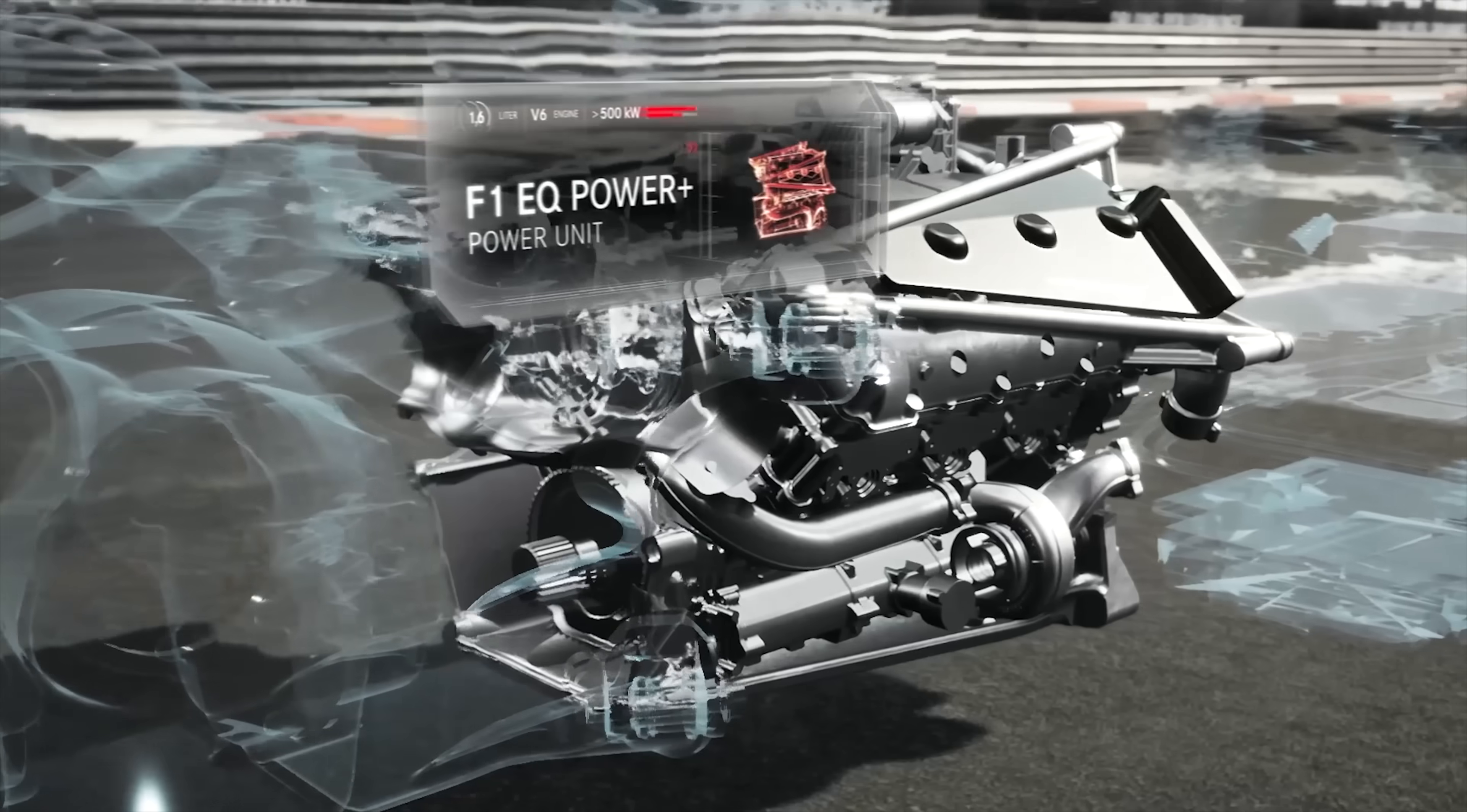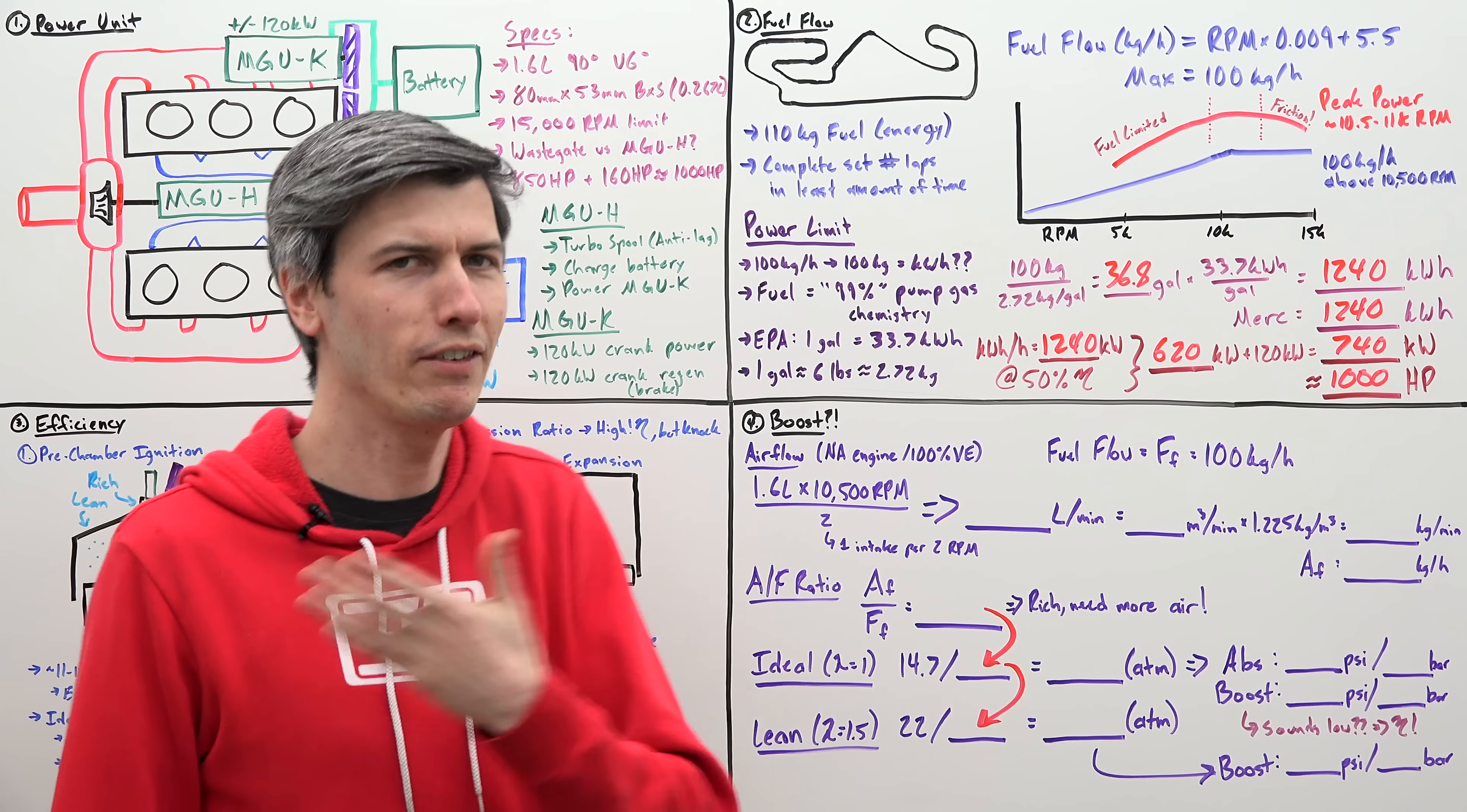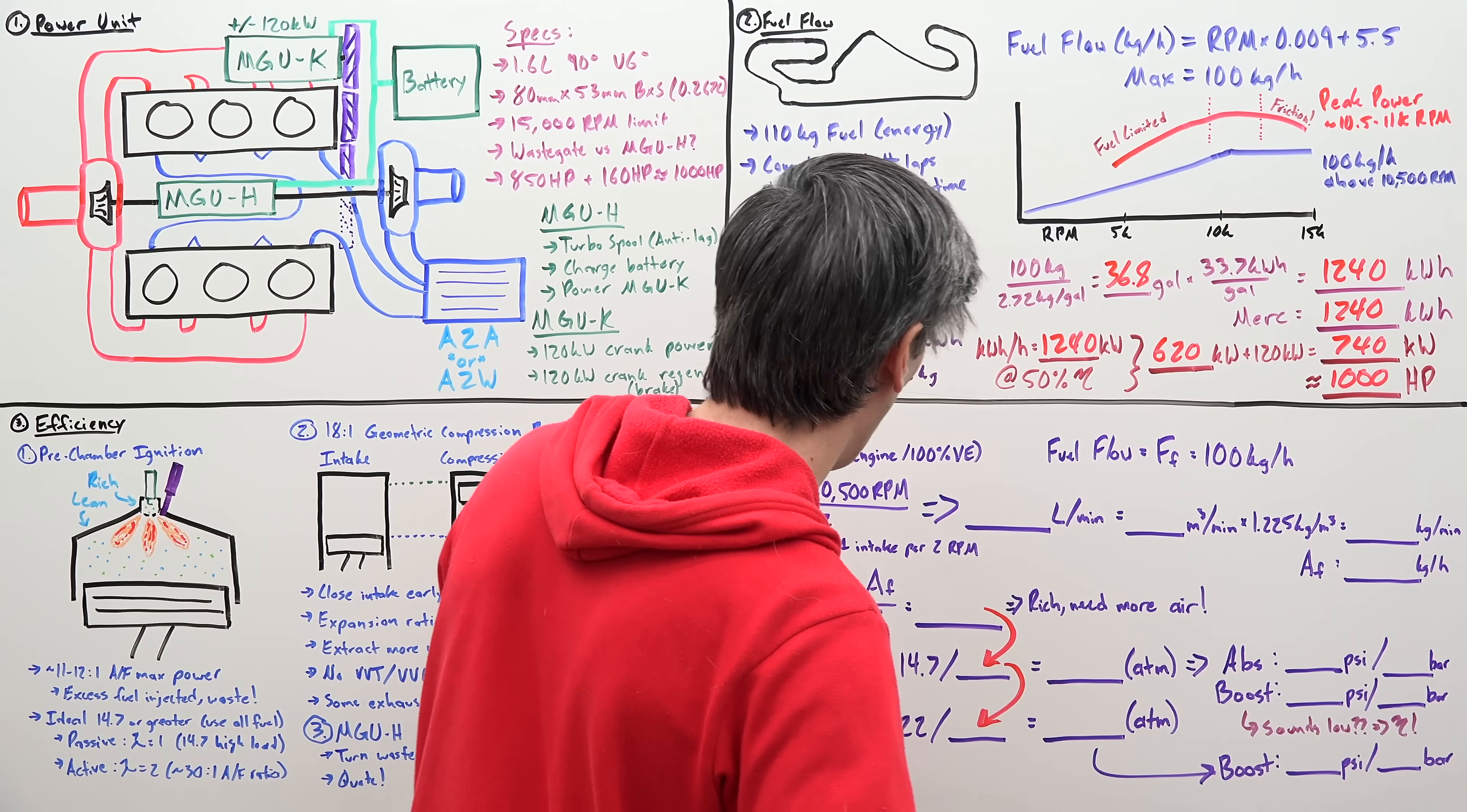Hmm, what does that sound like? So, they're expecting close to 50% thermal efficiency using pre-chamber ignition, as well as electrified turbocharger systems. Now, something I've always wondered is we've got these tiny engines, just 1.6 liters, and they're making about 850 horsepower. So, how much boost are these turbochargers actually providing? And I've not been able to find a legitimate source that states what this boost level is. So, let's try to calculate it. So, we know that our fuel flow is 100 kilograms per hour. What is our air flow?